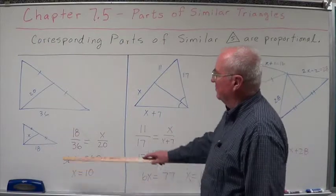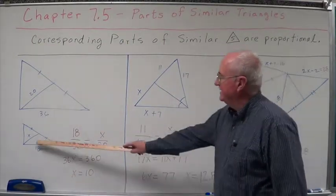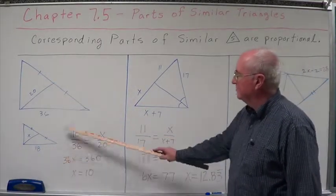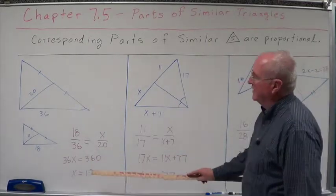So let's set this up. We want to find x. 18 is to 36 as x is to 20. 18 is to 36 as x is to 20. Cross multiply, 36x equals 360, x equals 10.